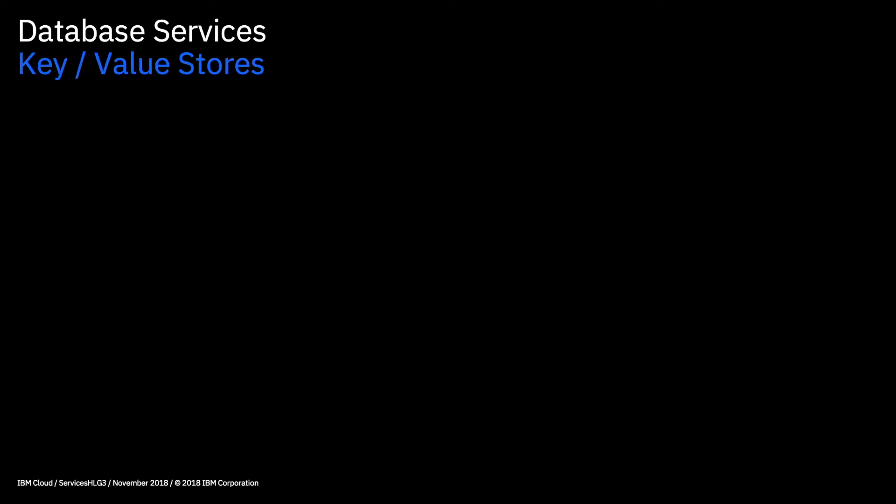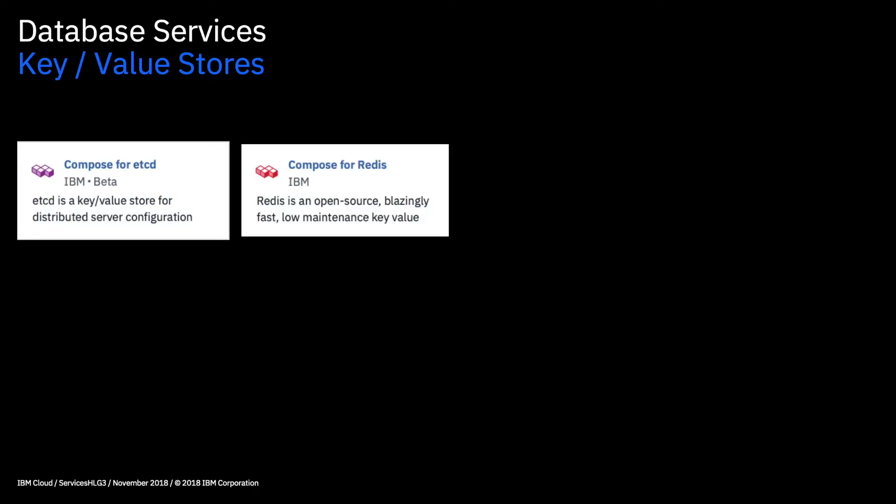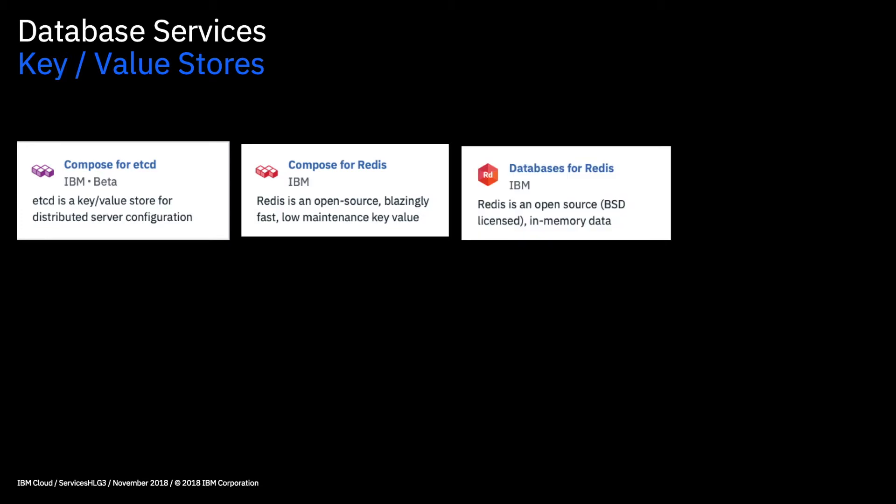Next up we have Key Value Stores, and these are good for applications which need to quickly store or cache data. These tend to be in-memory databases, which means they're blindingly fast because they don't have to read or write anything from disk. Here we have Compose for ECD, Compose for Redis, and Databases for Redis as well.